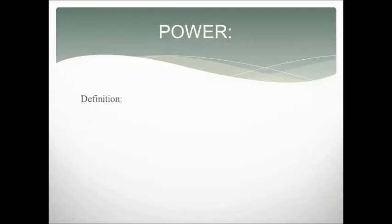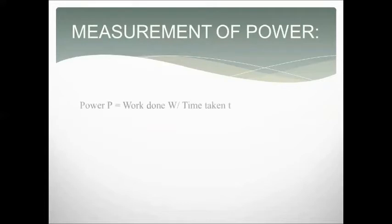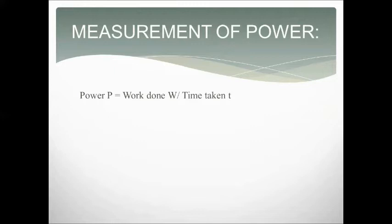But what about power? Who spent more power in doing this work? Power can be defined as the rate of doing work. It is a scalar quantity — power has only magnitude and no direction. If W work is done in time t, then power can be measured as work done divided by time taken. So P is equal to W by t.